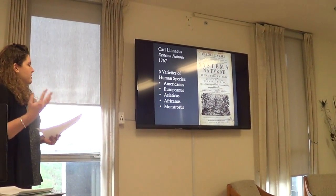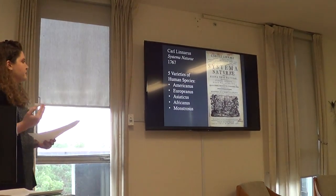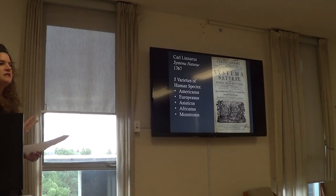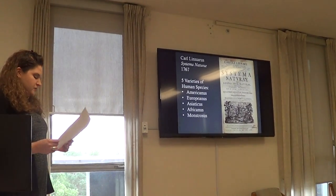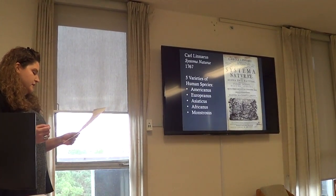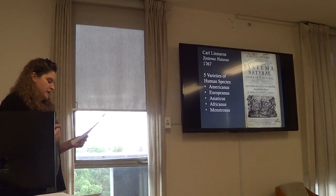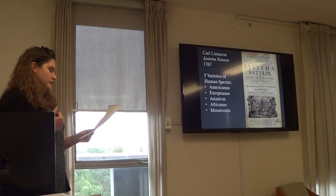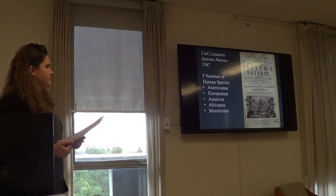I'd like to briefly touch on a bit of basic colonial history because in many ways it forms the backdrop, but also the content of the images we'll be looking at shortly. Carl Linnaeus was a Swedish physician, zoologist, and botanist, noted for establishing a linear view of nature embodied in his Scala Naturae, which he came up with in 1767.